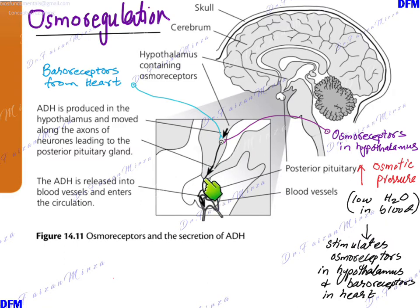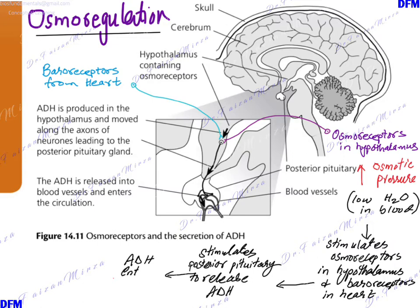This is the pituitary gland and the hypothalamus associated with it. This is the cell that ends up making the ADH hormone. The ADH hormone enters into this circulatory system, these capillaries, and they will take this hormone into the blood and to the kidneys. Once the osmoreceptors are stimulated, the posterior pituitary gland releases the hormone ADH. ADH will enter the bloodstream and get circulated to the kidneys.